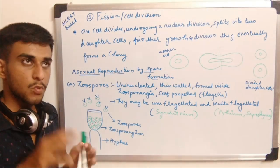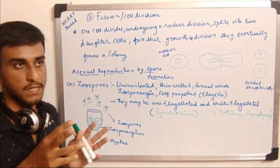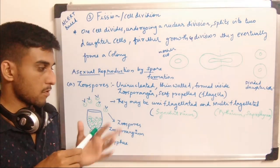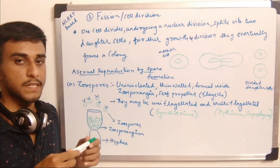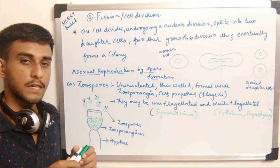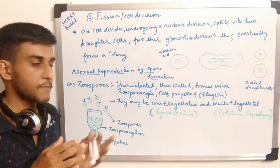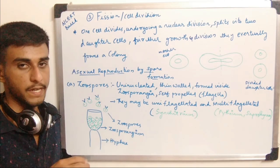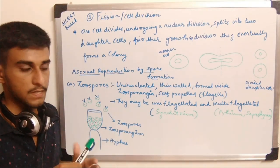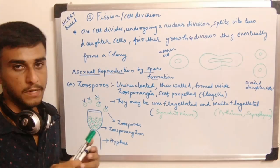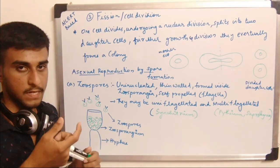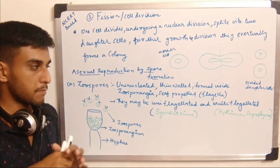A good example of a uniflagellate fungus is Synchytrium, and multiflagellate fungi are Pythium and Saprolegnia. These names should be memorized as they have been asked in previous questions. So zoospores are uninucleated, thin-walled, formed inside a zoosporangium, and self-propelled by flagella.